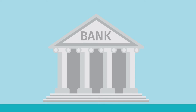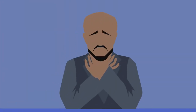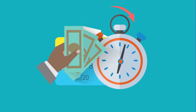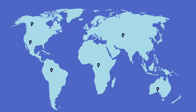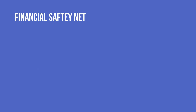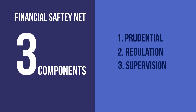The importance of banks in the economy, the potential for depositors to suffer losses when banks fail, and the need to mitigate contagion risks lead countries to establish financial safety nets. A financial safety net is usually made up of three components: prudential regulation and supervision, a lender of last resort, and a deposit protection scheme.